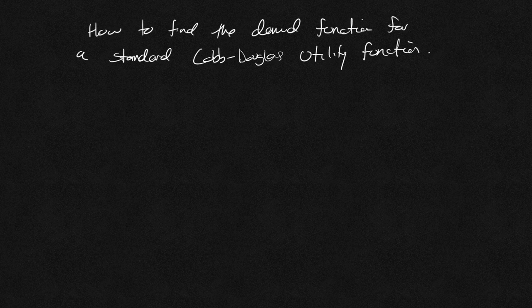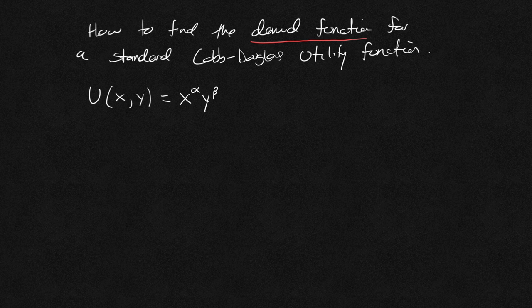So let's go over this. If we have the utility function, a standard utility function with x and y as our inputs, if it's Cobb-Douglas, we have x raised to some variable, let's call this alpha, and y raised to beta. So we're looking for a demand function, meaning let's go ahead and try and figure out how much x is wanted and how much y is wanted.